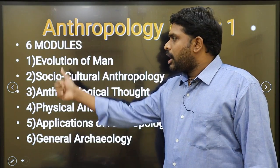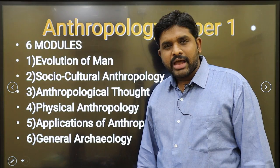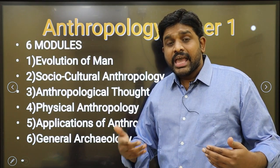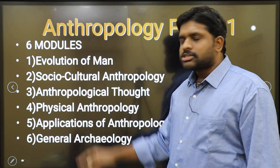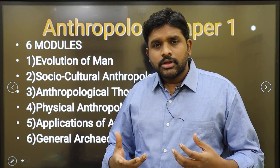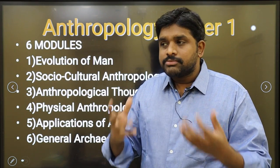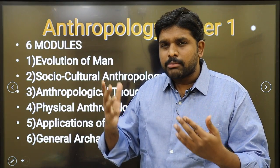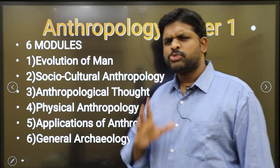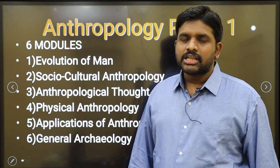Module one: evolution of man — how evolution of man happened, everything with respect to the evolution of man. Module two: socio-cultural anthropology — society, culture, marriage, family, kinship, economic systems, political systems, and religion. Module three: anthropological theories — the thought process of anthropologists, their views with respect to culture, marriage system, family system, and society. What is their thought process — their mindset — that we will be discussing in anthropological thought.